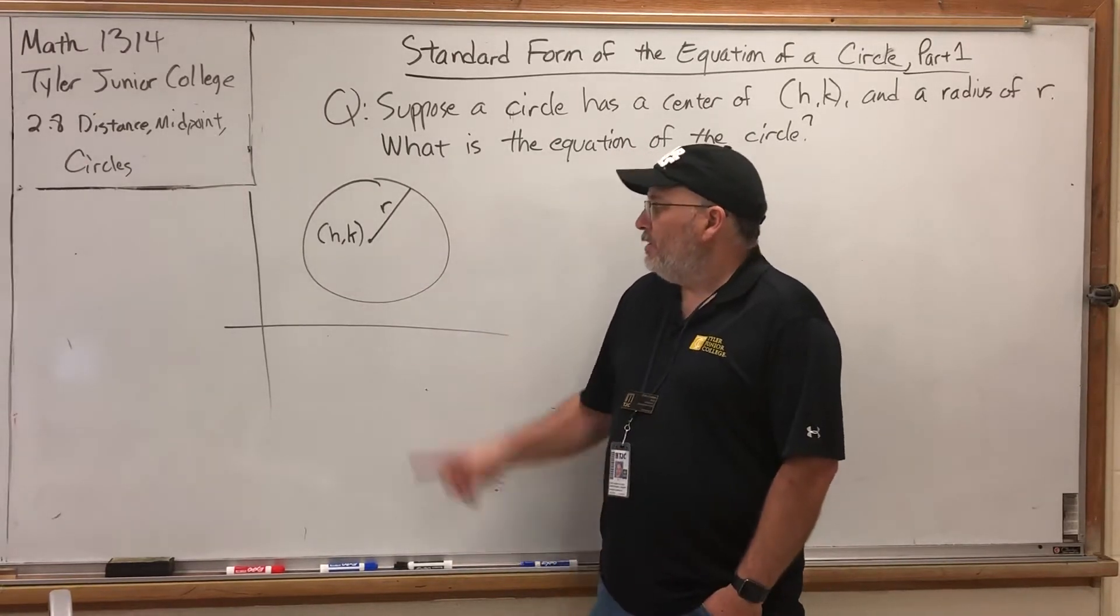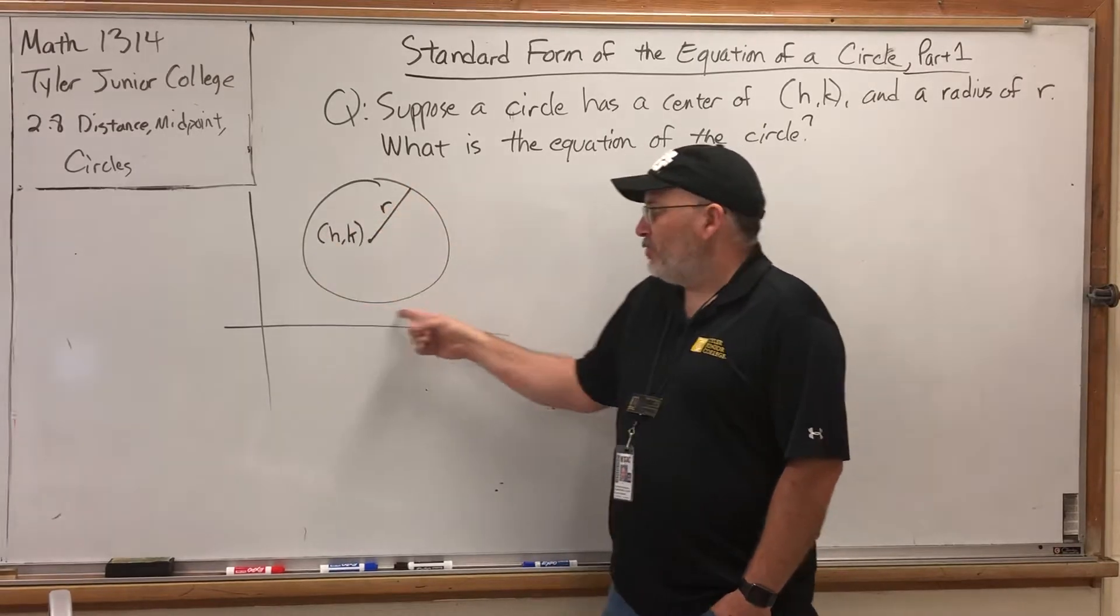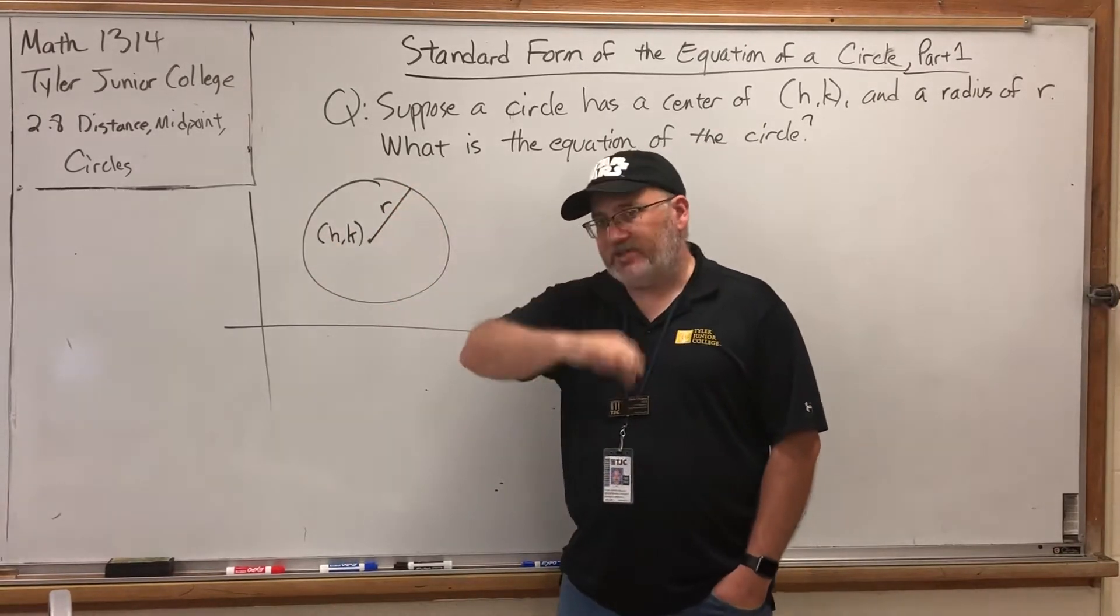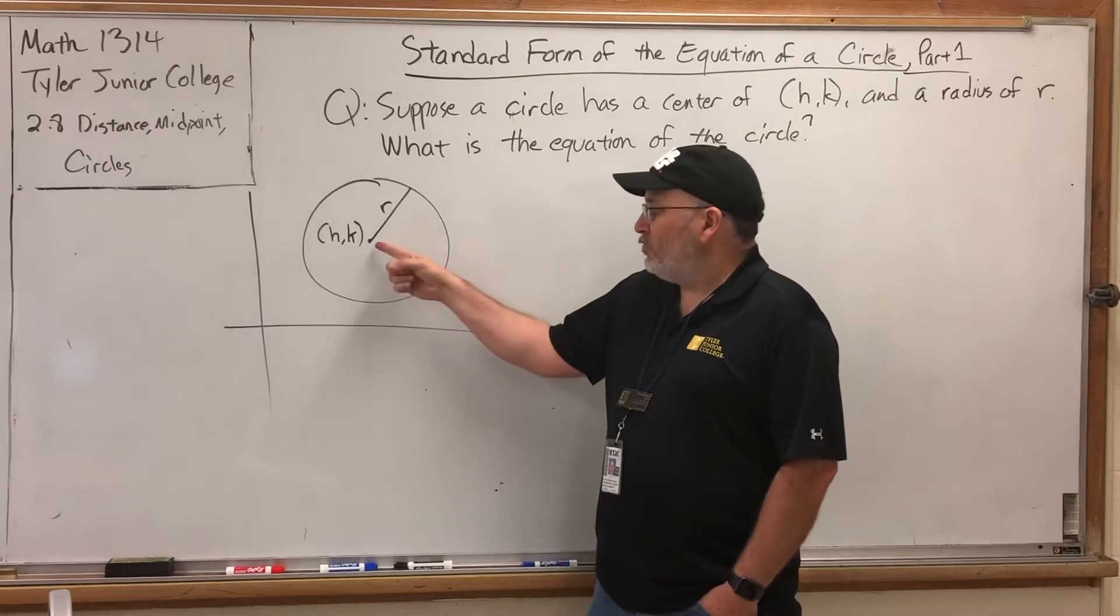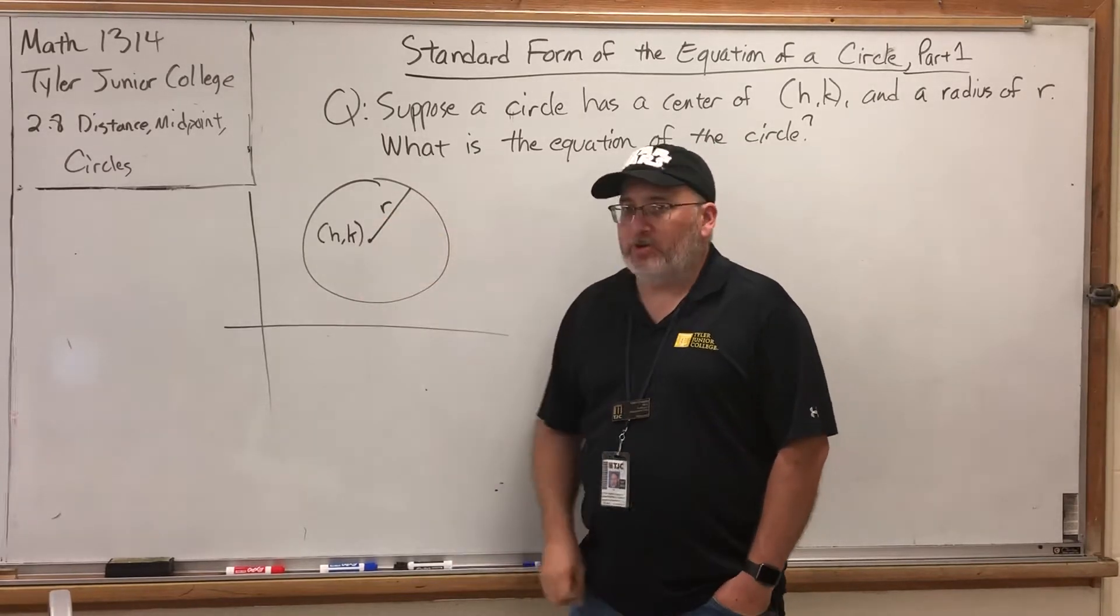What makes a circle a circle is all the points on the circle are the same distance from the center. That distance from the center to any point in the circle is called the radius.